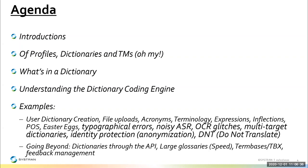And then multi-target dictionaries, how to do anonymization, identity protection, and do-not-translate. There are a bunch of features and functionalities. Beyond dictionaries, how to access a dictionary through API and handle large glossaries. And finally, the feedback management — that's internal feedback. If there are any errors when translating from one language to another and you want to give feedback, we have a feature for that which we'll walk you through as well.